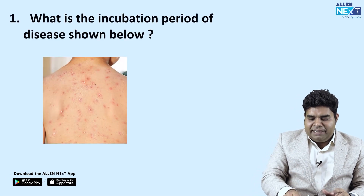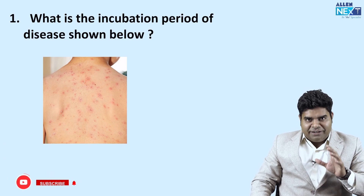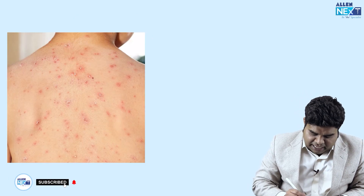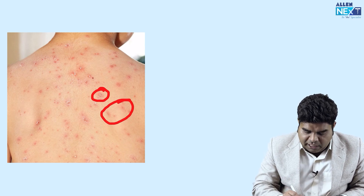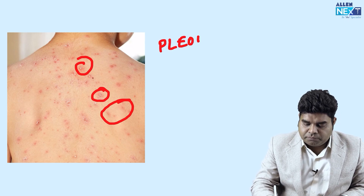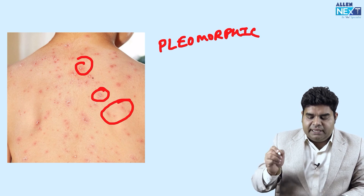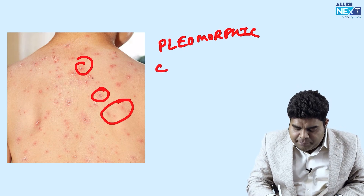Can you identify the disease shown in this image? Here you can see in this image that some rashes are pustules with pus, some have scaled off, and some are new coming out. That means different stages of rash are present together — these are known as pleomorphic rash. The second thing you can see is that the rashes are in the central area — these are centripetal rashes.